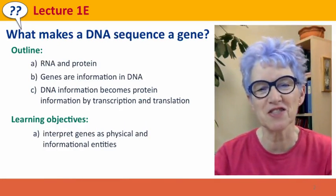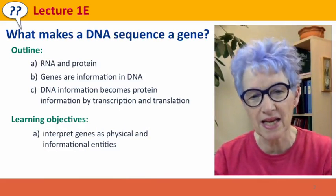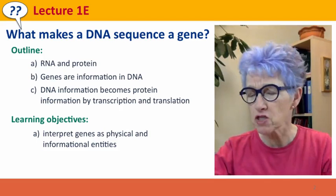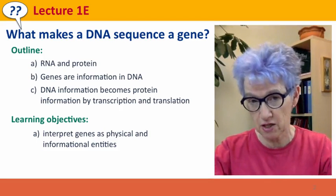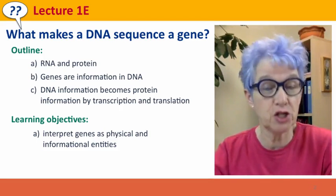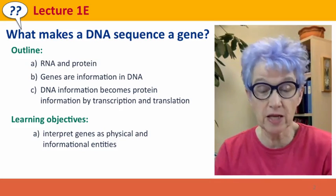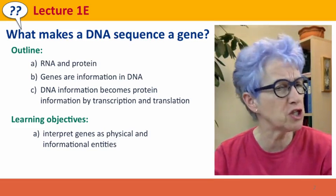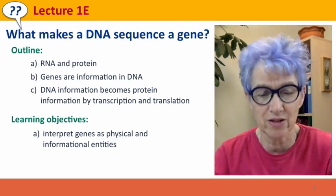Hi everyone, welcome back to Useful Genetics. This is Lecture 1E. We're going to talk about what makes some parts of our genome, some DNA sequences within our genome, be genes that function in producing everything we need to be the organisms we are, whereas the rest of our genome is just basically inert.